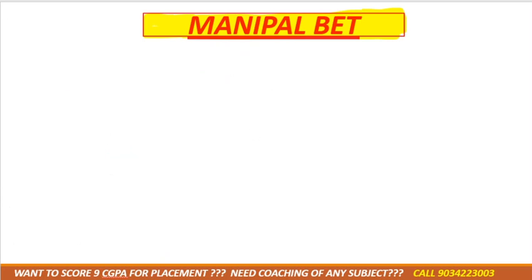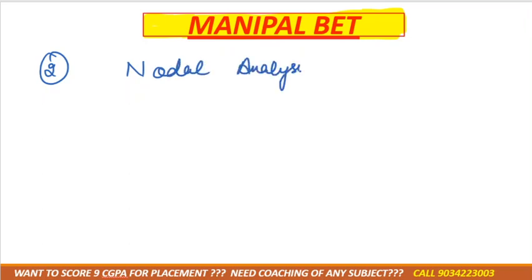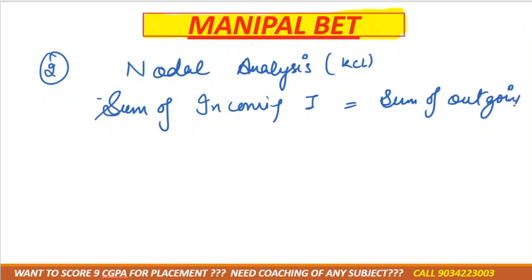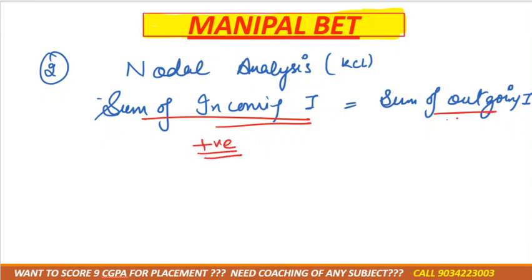That covers mesh analysis. The next topic is nodal analysis, also called KCL. In nodal analysis, the sum of incoming currents equals the sum of outgoing currents. Incoming current is denoted by a positive sign and outgoing current by a negative sign.